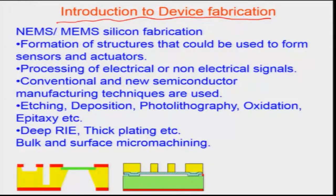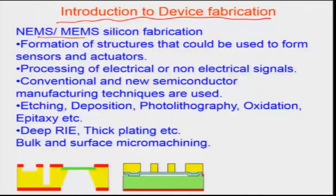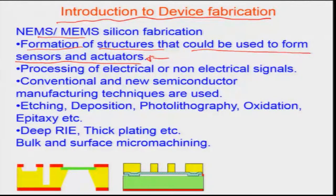Carbon electronics, which came much later, did not come into picture when microelectronic processing was developed ab initio. Therefore, MEMS initially focused on silicon-based structures but later, towards the 1980s, changed gears and went into polymeric structures. MEMS are typically fabricated by formation of structures that could be used to form sensors and actuators at the micro and nanoscale.